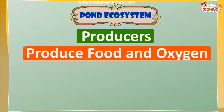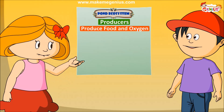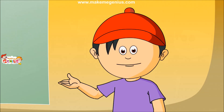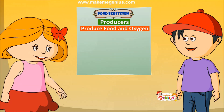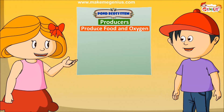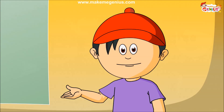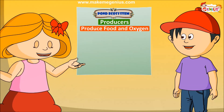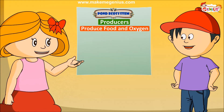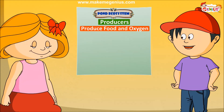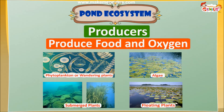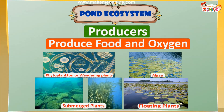They also produce oxygen so that the animals living in the pond can breathe. Can you name a few of the producers of a pond ecosystem? In every aquatic ecosystem — aquatic means water related, so pond, sea, river, oceans are all aquatic ecosystems — there are three or four types of producers: phytoplankton, algae, and plants.